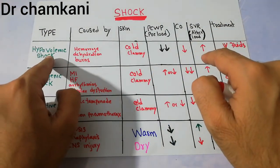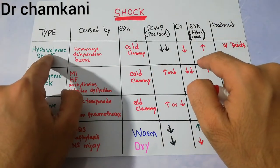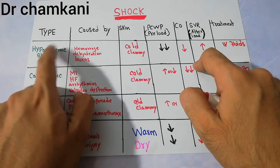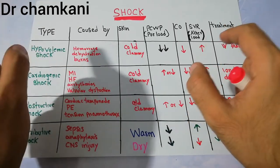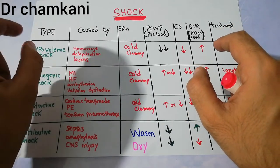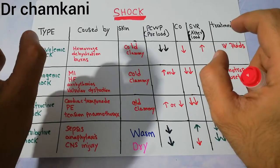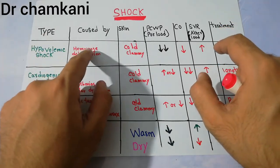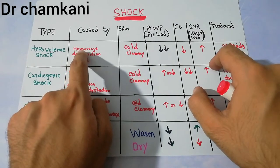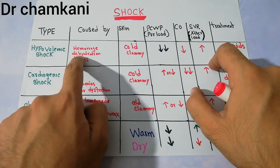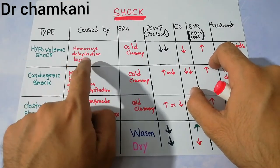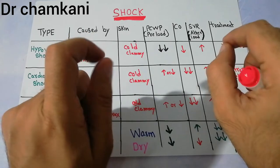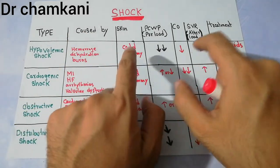The first type of shock we are going to consider is hypovolemic shock. Hypo means low and volemic means volume. This type of shock occurs due to loss of volume, and is caused by hemorrhage, blood loss, dehydration due to fluid loss, and burns which also lead to plasma loss.